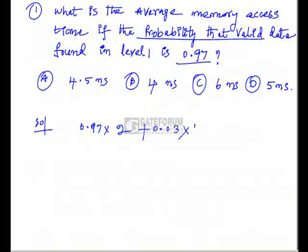That is already given. 100 plus 2, 102. So 0.97 into 2 plus 0.03 into 102. So this will be around 5 nanoseconds. So we require to have effective access time is 5 nanoseconds.